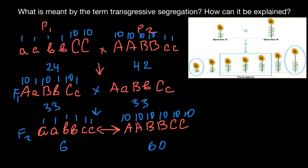Why is transgressive segregation important? The greater the range of genotypes, the greater the range of phenotypes. Under certain circumstances, some phenotypes may be better fitted than others, giving them better chances to survive. But under different circumstances, other phenotypes may have better fitness — so transgressive segregation contributes to genetic diversity and adaptability.